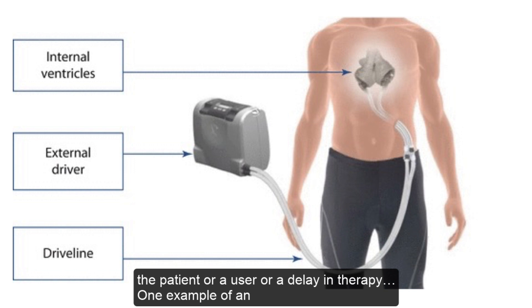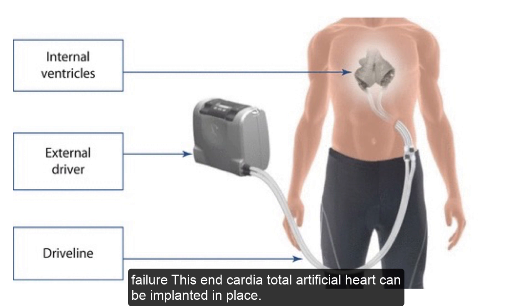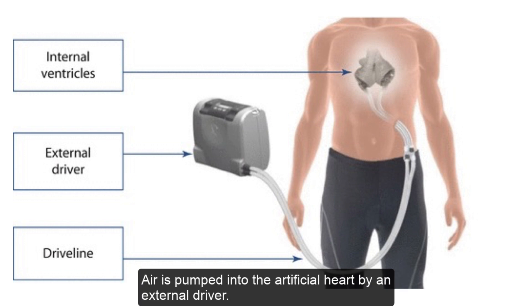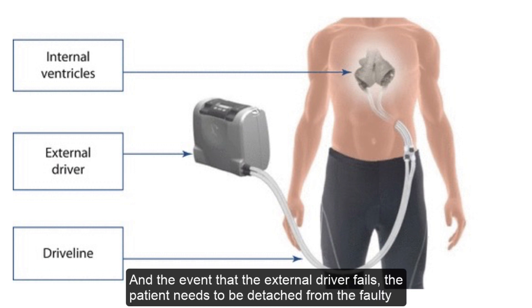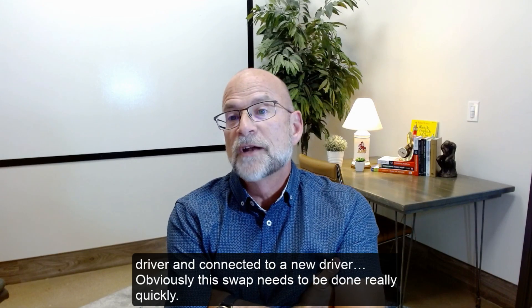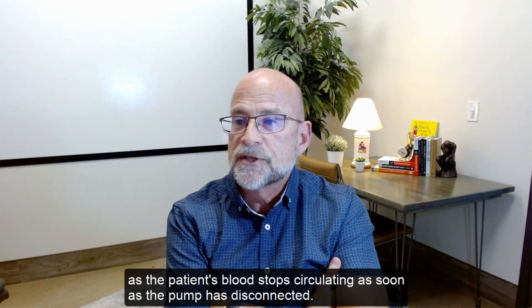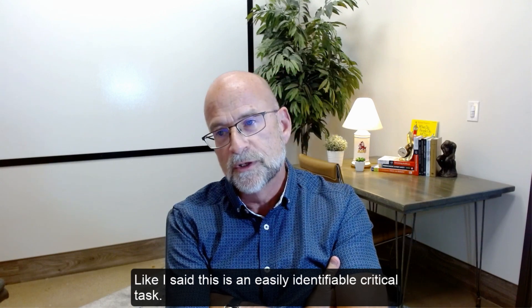One example of an obvious critical task is found in SynCardia's total artificial heart. In the event of complete heart failure, the SynCardia total artificial heart can be implanted in place of the two ventricles as a bridge to transplant. Air is pumped into the artificial heart by an external driver through tubes called drive lines. If the external driver fails, the patient must be detached from the faulty driver and connected to a new one — quickly, as blood stops circulating as soon as the pump is disconnected.